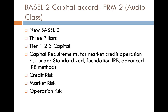Tier 3 capital consists of short-term subordinated debt and can only be used to meet capital requirements related to market risk. To qualify, the short-term subordinated debt must be unsecured, not in arrears, and issued with a maturity of less than two years. There is no limit on Tier 1 capital use; Tier 2 capital is limited to 100% of Tier 1. The Basel 3 Accord recommends that Tier 2 and Tier 3 capital together cannot be greater than Tier 1 capital, but leaves final regulation up to the regulators in the bank's home country.